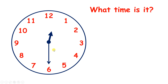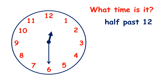The minute hand is on the 6, so it's half past, and the hour hand is between 12 and 1, so it's half past 12, or 12:30 on a digital clock. Thank you.